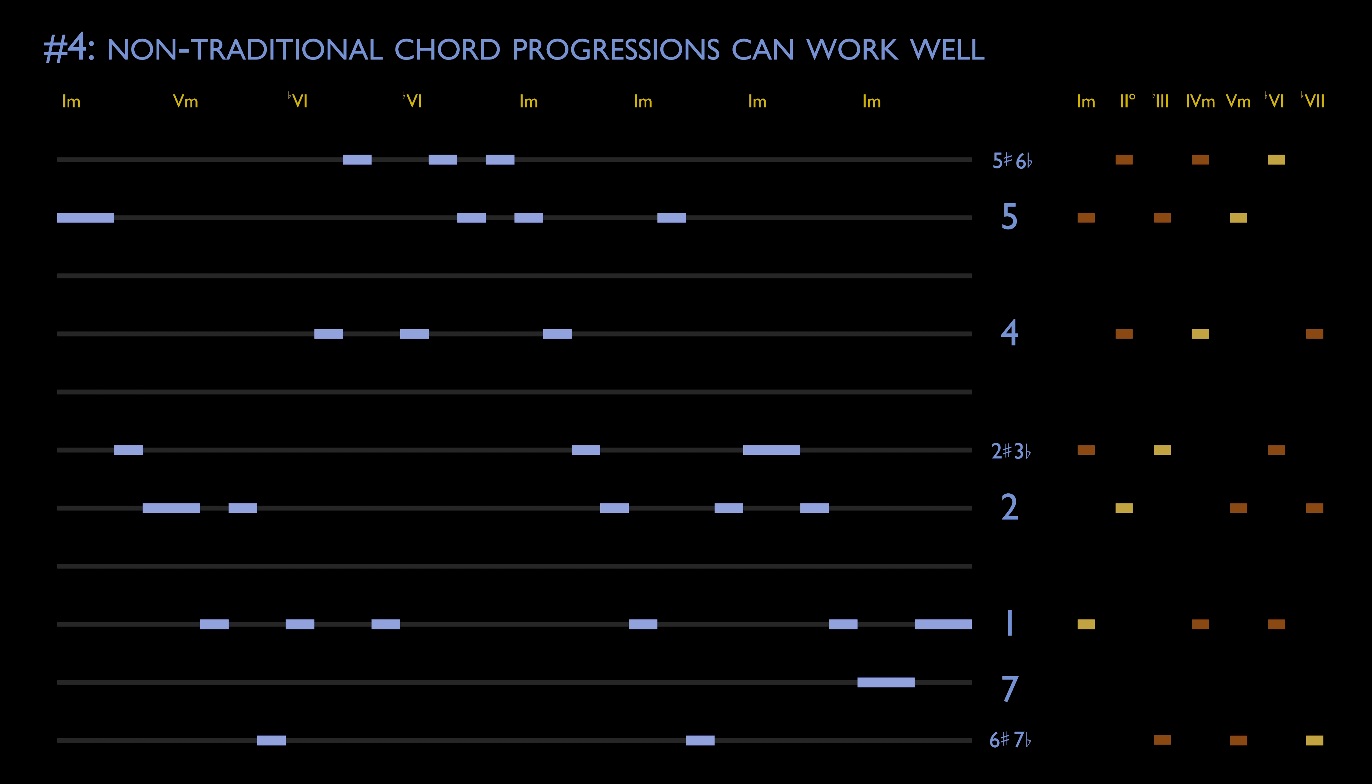Number four: Non-traditional chord progressions can work well. Once you know the common chord progressions, it can be useful to deviate from those progressions intentionally. The ear is expecting one thing, and you play another. It keeps music interesting. As mentioned before, it's often the unexpected parts of a piece of music that we enjoy the most. Much of composition can be boiled down to manipulation of expectations. Let's get a little adventurous and change this chord to a b3. A little unusual, perhaps, but it's nice.